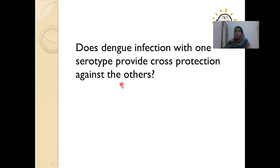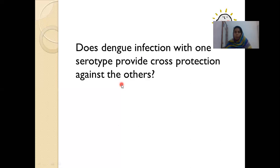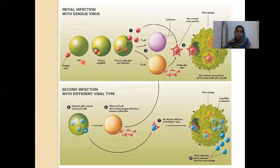Does dengue infection with one serotype provide cross-protection against the other serotypes? No — dengue infection will not provide cross-protection against other serotypes, but the same serotype will be protective. If a patient is infected first time with dengue virus 1 and a second time with dengue virus 3 or 4, that second infection tends to be more severe.